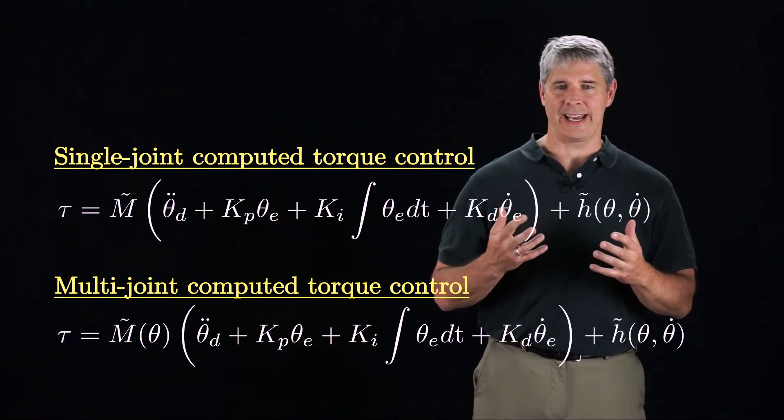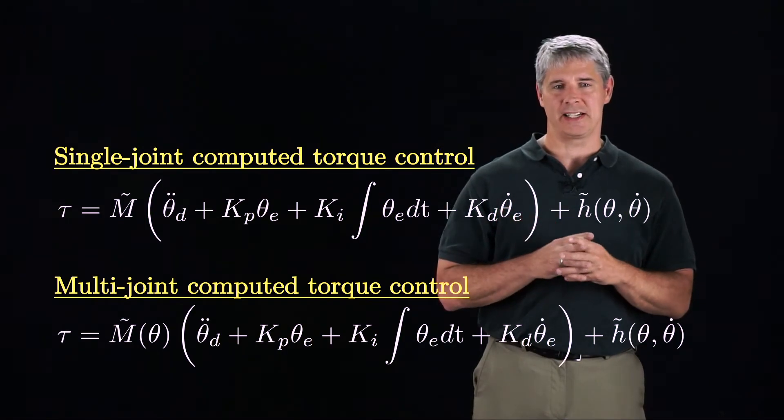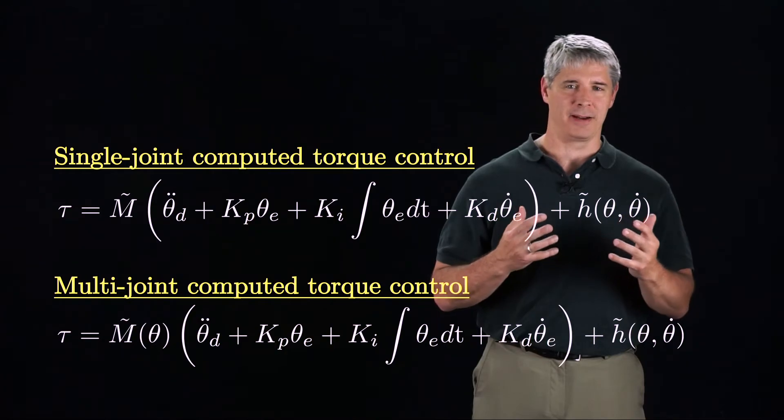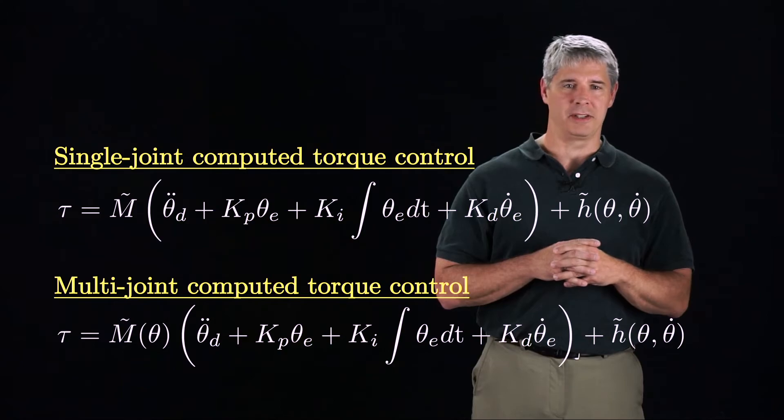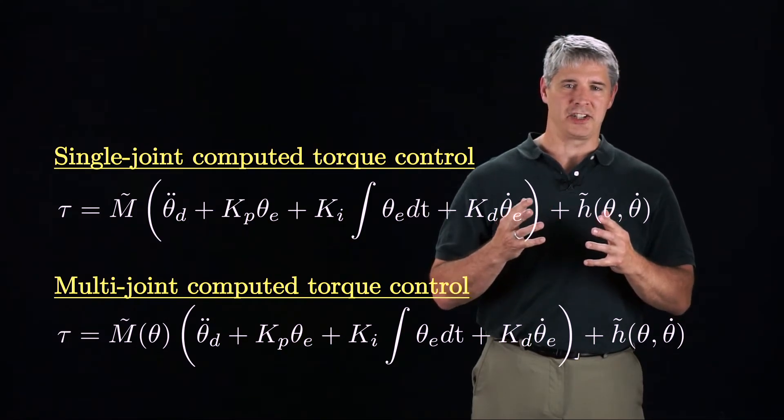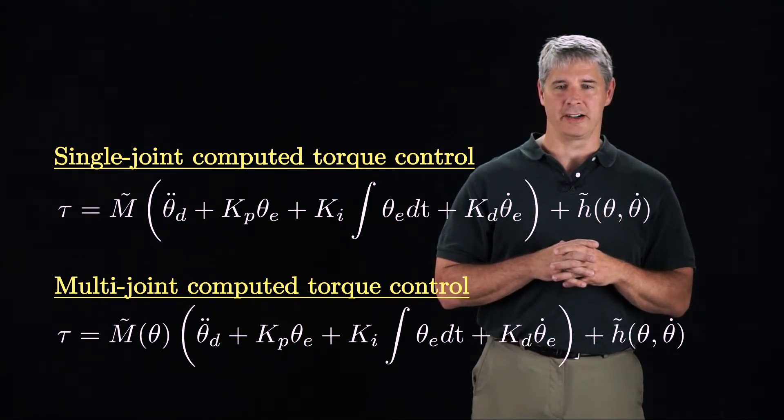And Kp, Ki, and Kd are diagonal matrices, each consisting of a positive scalar times the identity matrix. The linearization of the dynamics provided by the model M tilde and H tilde makes each joint have the same stable linear error dynamics.